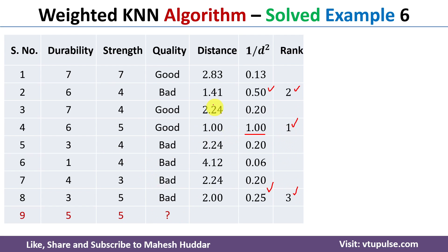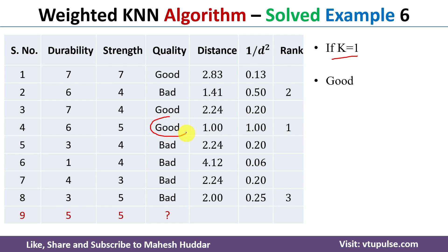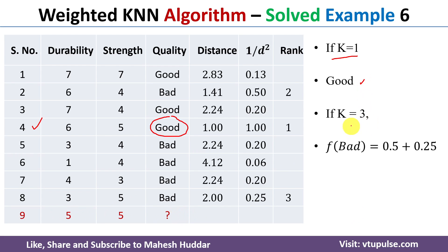When k=1, we consider only the nearest neighbor. The fourth example has the highest inverse square distance and its class is 'good', so the new example is classified as 'good'.